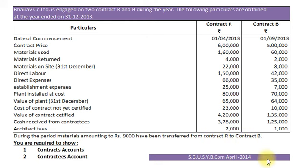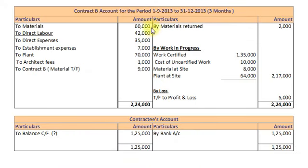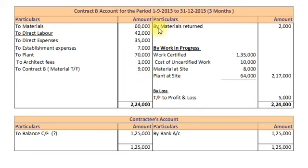Now we will prepare Contract B's Account for the period 1st September 2013 to 31st December 2013 — 3 months. On Debit side: Materials Rs. 60,000; Direct Labour Rs. 42,000; Direct Expenses Rs. 35,000; Establishment Expenses Rs. 7,000; Plant Rs. 70,000; Architect Fees Rs. 1,000; and Material Transfer from Contract R Rs. 9,000. On Credit side: Material Return Rs. 2,000; and by Work in Progress — Work Certified Rs. 1,35,000; Cost of Uncertified Work Rs. 10,000; Material at Site Rs. 8,000; Plant at Site Rs. 64,000.